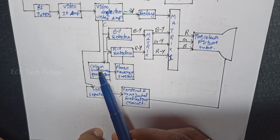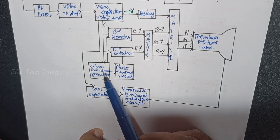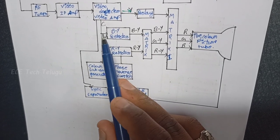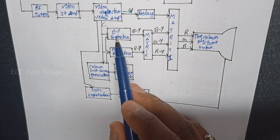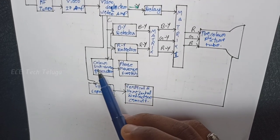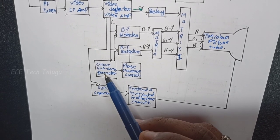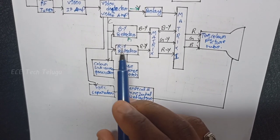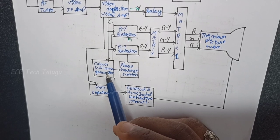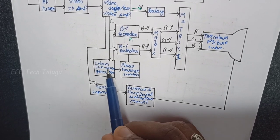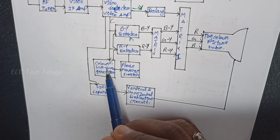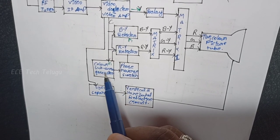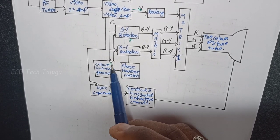To modulate the signal at the transmitter, we used a subcarrier. This subcarrier is part of the composite video signal. Now at the receiver, we need to generate the same carrier frequency — for example, F1. The color subcarrier generator at the receiver generates that same F1 carrier frequency so we can properly demodulate the chrominance signal.